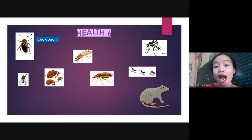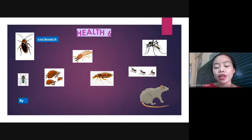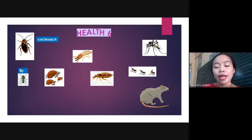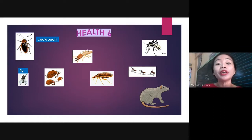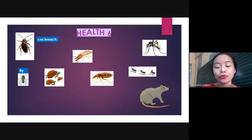That's how old they are. Next is fly. Diptera is its scientific name, and did you know that there are over 120,000 species of flies worldwide?